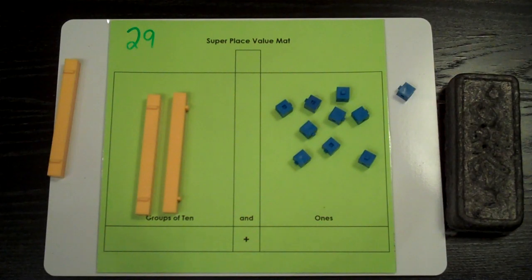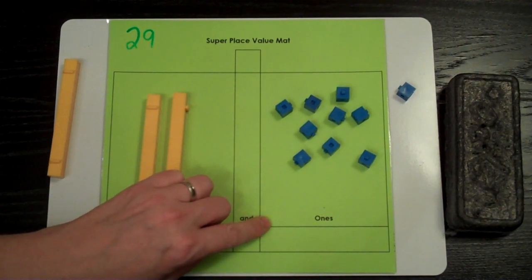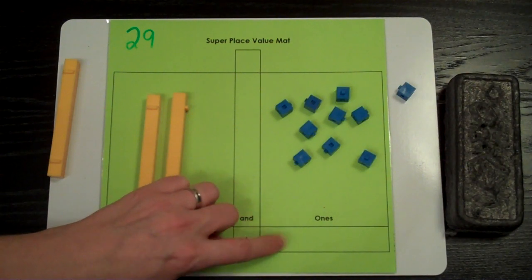Now, let's fill in the mat with what we have made. On the right, we have nine units, and we write it here. Let's double check before we write.